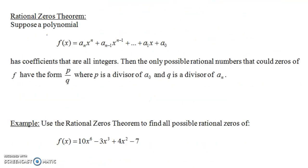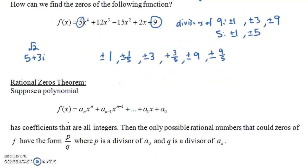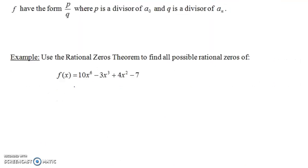So the rational zeros theorem says this: suppose you have a polynomial of this form — just like we had our polynomial up here — with coefficients that are all integers. Then the only possible rational numbers that could be zeros of f have the form p over q, where p is a divisor of a sub zero (a naught) and q is a divisor of a sub n. So any rational number that's a zero of this function must have the form p over q, where p divides a naught and q divides a sub n.